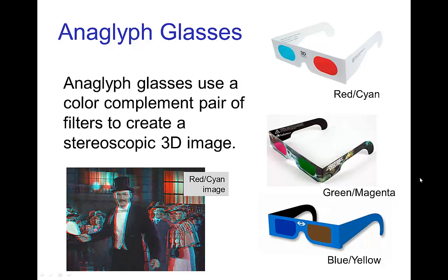You see this used in, for example, anaglyph glasses, which are the glasses which are used to see 3D images using projection of two images, one with red and the other one with cyan, for example. And the other types of 3D glasses use the other color complements. Another common one is green magenta, and the somewhat less common one is blue yellow.